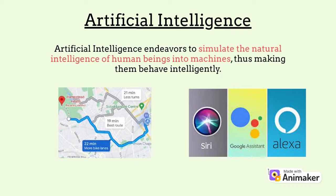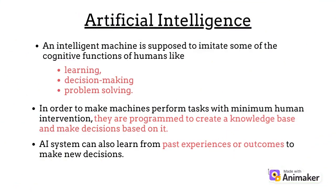We can say that Artificial Intelligence endeavors to simulate the natural intelligence of human beings into machines, thus making them behave intelligently. Artificial Intelligence is all about teaching machines to think like humans and behave intelligently. An intelligent machine is supposed to imitate some of the cognitive functions of humans like learning, decision making and problem solving. In order to make machines perform tasks with minimum human intervention, they are programmed to create a knowledge base and make decisions based on it. AI systems can also learn from past experiences or outcomes to make new decisions.